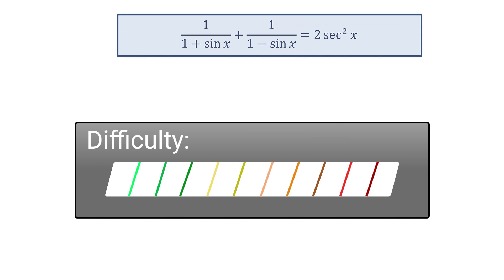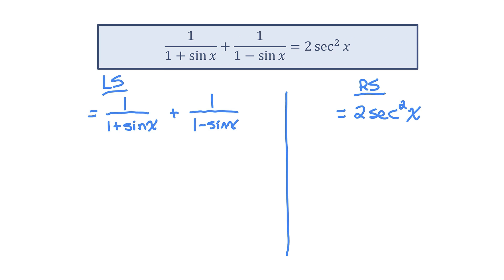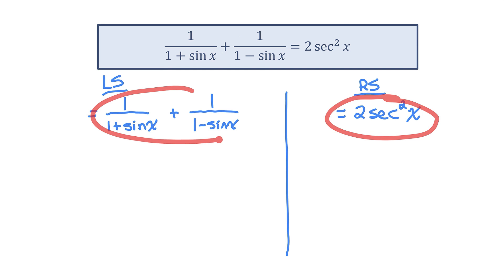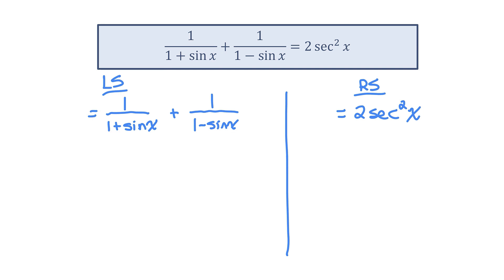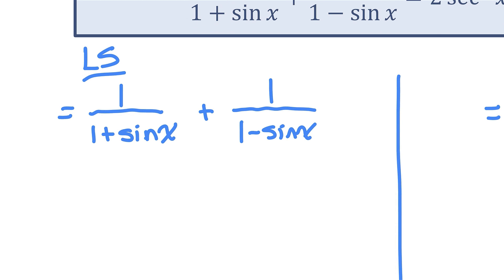Identity number two. I'll separate into left and right side. The first thing I notice is on the right side I have a single term, but on the left I have two terms being added. So to show that they're equal expressions, I'm going to combine the terms on the left by getting a common denominator. The first term I'll multiply by 1 minus sin x top and bottom, and the second term by 1 plus sin x top and bottom — making their common denominator the product of the two denominators.